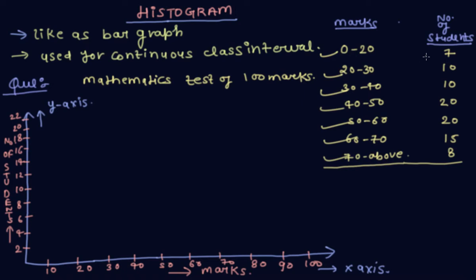So draw this graph. 0 to 20, 7 students. 7 lies between 6 to 8. So this is first. 20 to 30, 10 students.